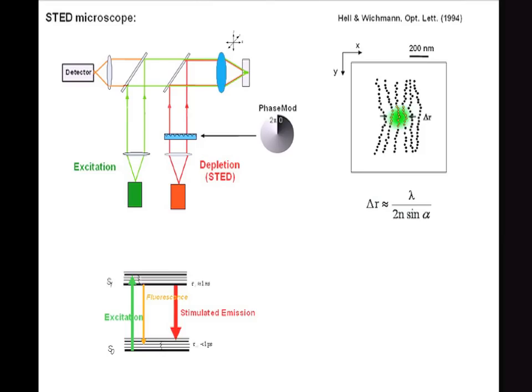Just using a beam of light for stopping the spontaneous emission wouldn't be helpful if it were just focused on the excitation spot. So we have to select a range of molecules, and this is why we apply a phase modification — we modify the beam such that it forms a donut. We want to stop the fluorescence emission at the outer part of the spot by inducing stimulated emission with the red beam, and so we get a slightly higher spatial resolution because some of the molecules turn dark and are not visible to the detector.